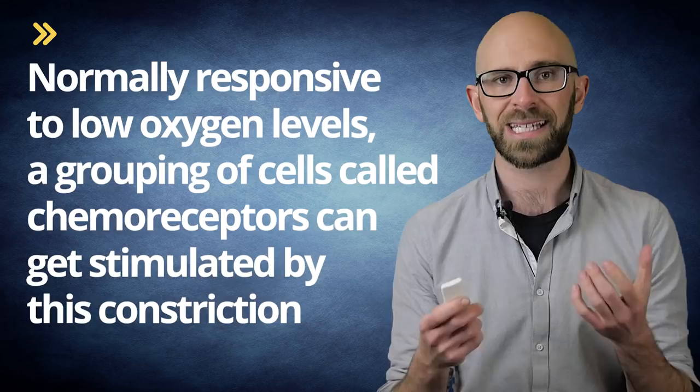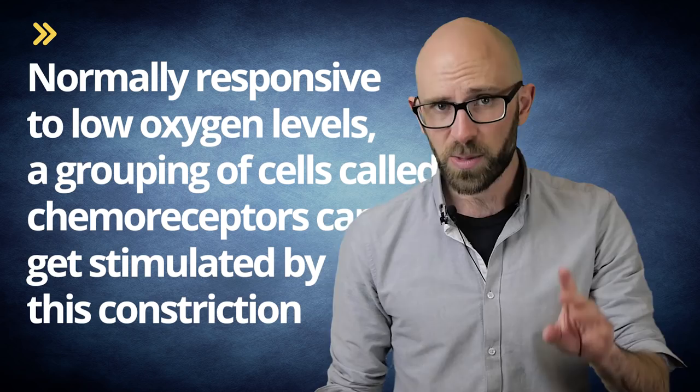Normally responsive to low oxygen levels, a grouping of cells called chemoreceptors can get stimulated by this constriction. Indirectly, this will have a response affecting your vagus nerve. The vagus nerve can stimulate part of your parasympathetic nervous system, your rest and digest nervous system, which increases the rhythmic contractions within the colon. Thus, taking in caffeine may result in an increase in your gastric motility, known as peristalsis.